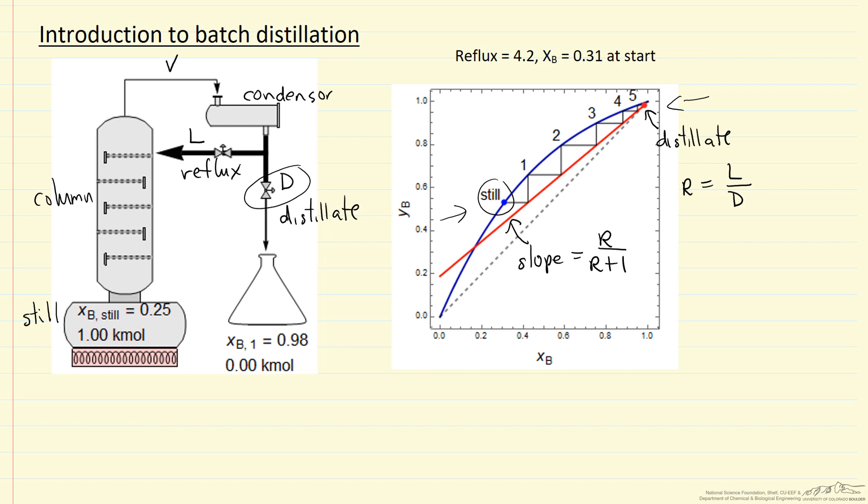But the slope remains the same, just R over R plus one. So let's look at what this Y-X diagram would look like at a later time.